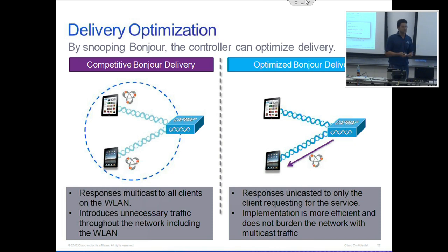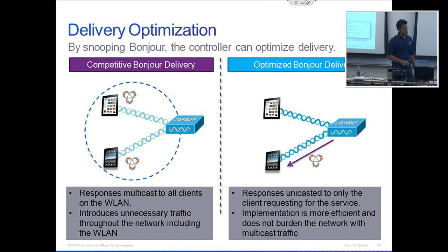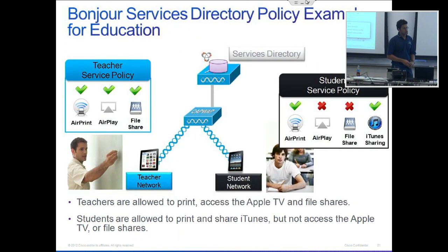For devices that don't really need this information, they don't get it. We just did a small test. Question: is the controller also stopping requests on the same subnet? So there's somebody else on the same subnet as the iPad making a request — the controller is still blocking that? Yes, as well as blocking anyone from a different subnet.